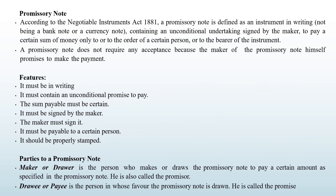The next topic is the promissory note. According to the Negotiable Instruments Act 1881, a promissory note is defined as an instrument in writing — not being a banknote or a currency note — containing an unconditional undertaking signed by the maker to pay a certain sum of money only to the order of a certain person or to the bearer of the instrument.